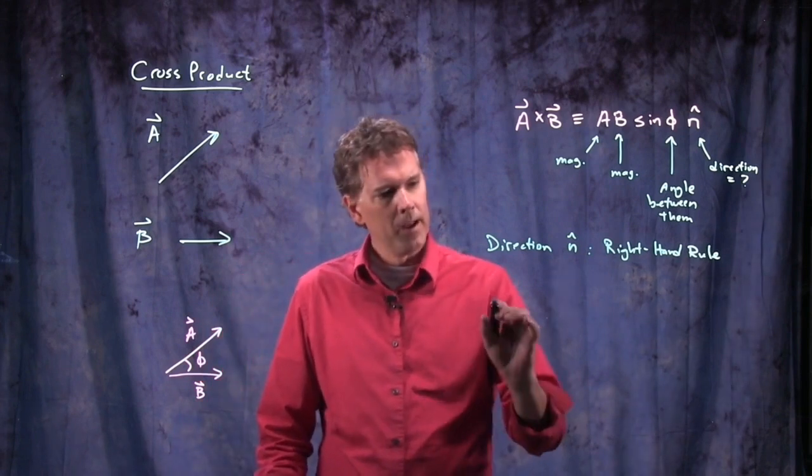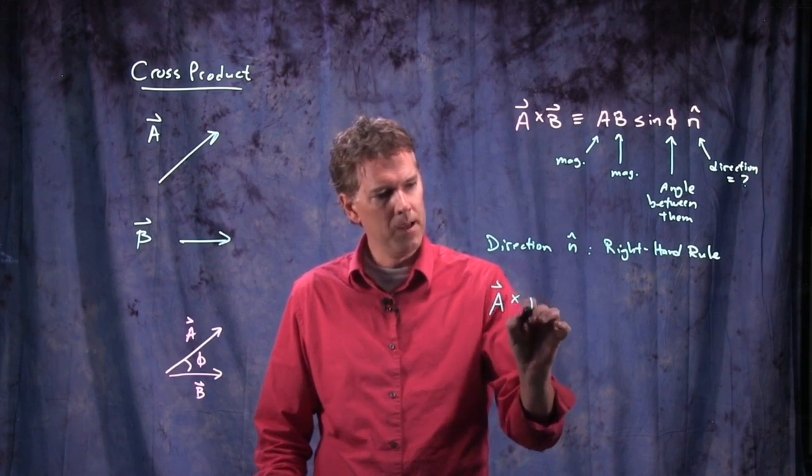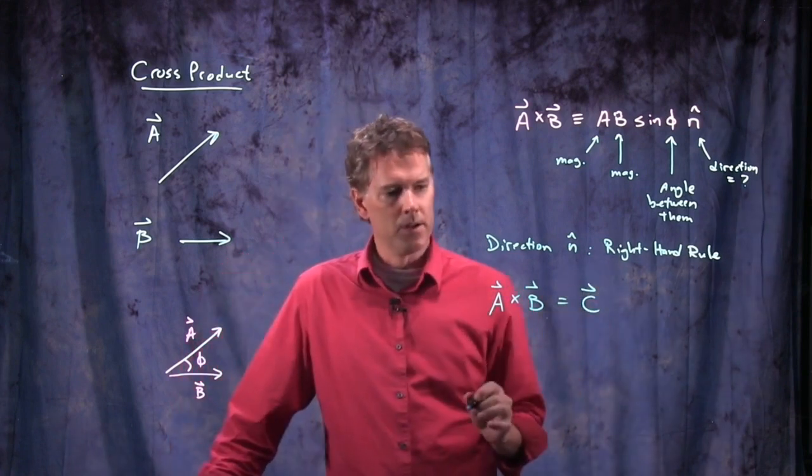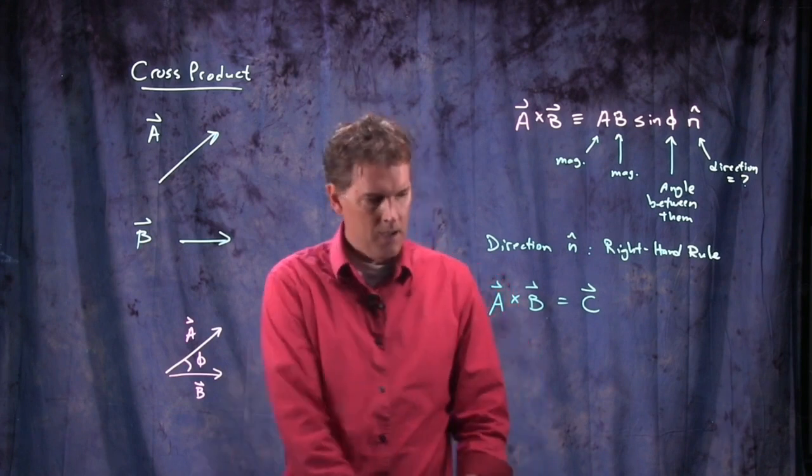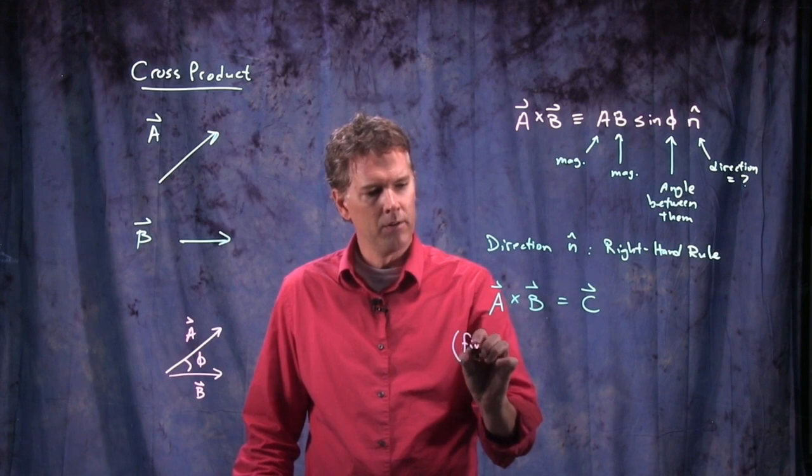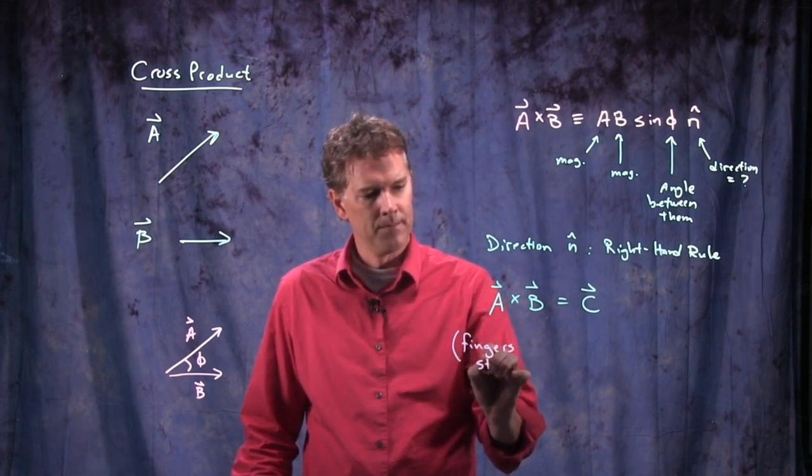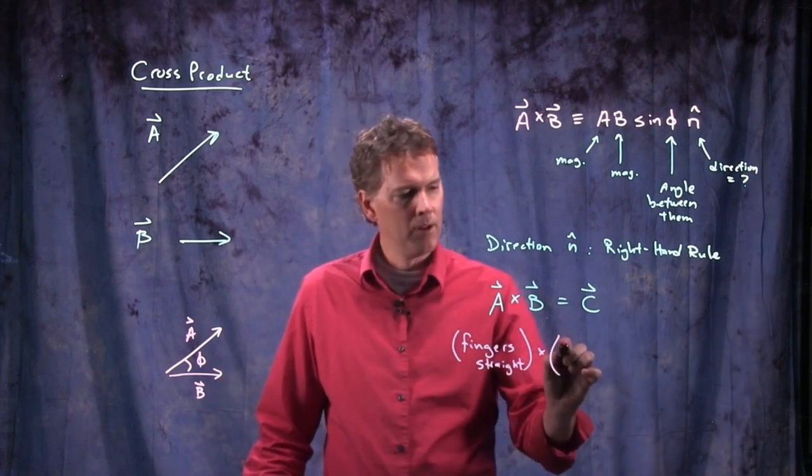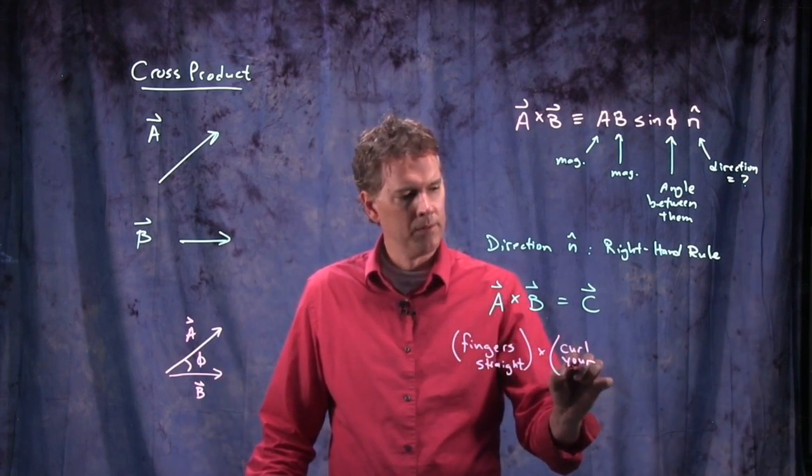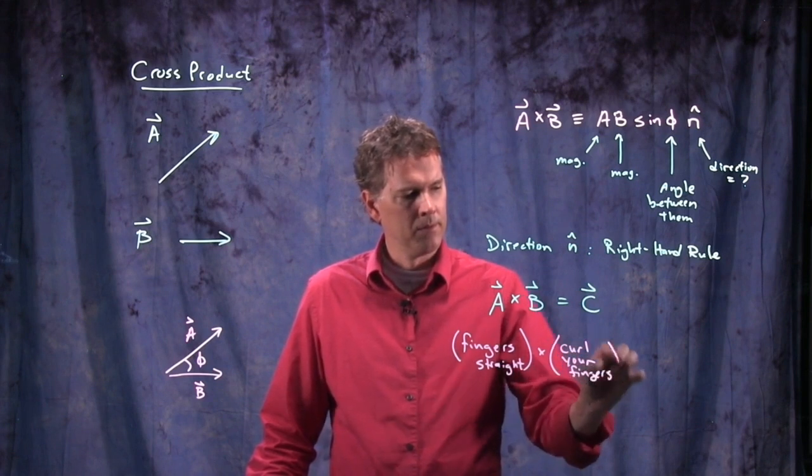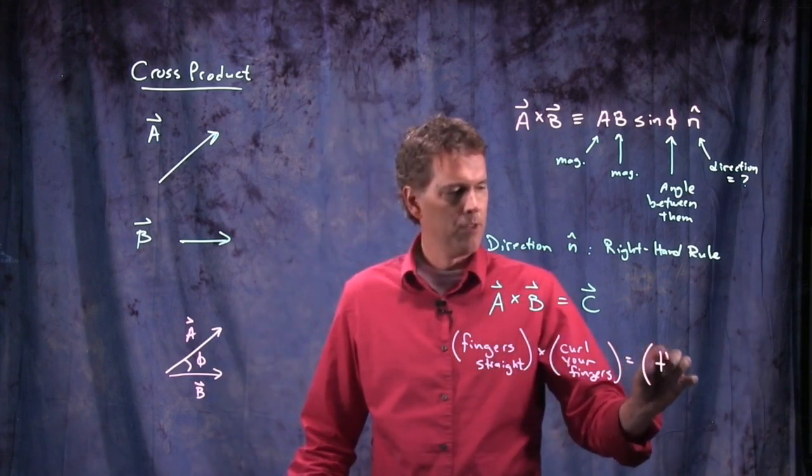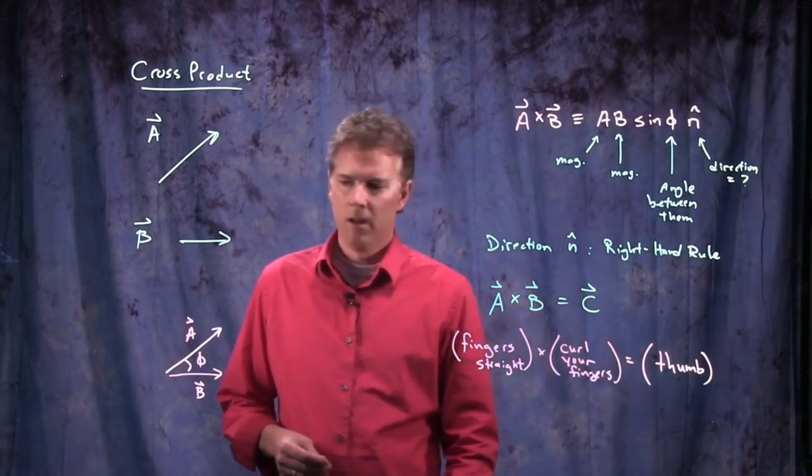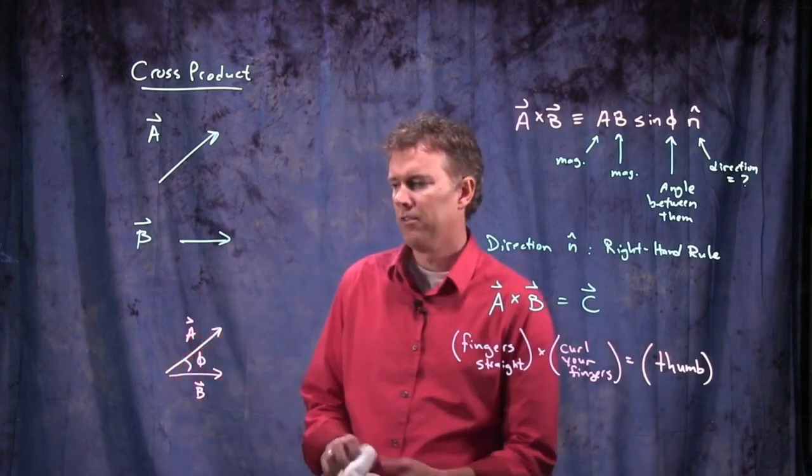The right-hand rule is the following. If I have A cross B, and that's going to equal some vector C, the way you figure out the direction is the following. A, you do your fingers straight. B is you curl your fingers. C is the direction of your thumb. And it's called the right-hand rule because you have to do it with your right hand. So let's see if we can figure it out for this simple example that we just talked about.